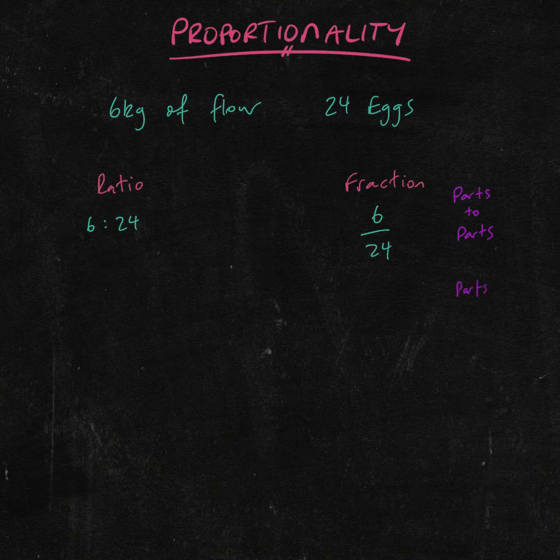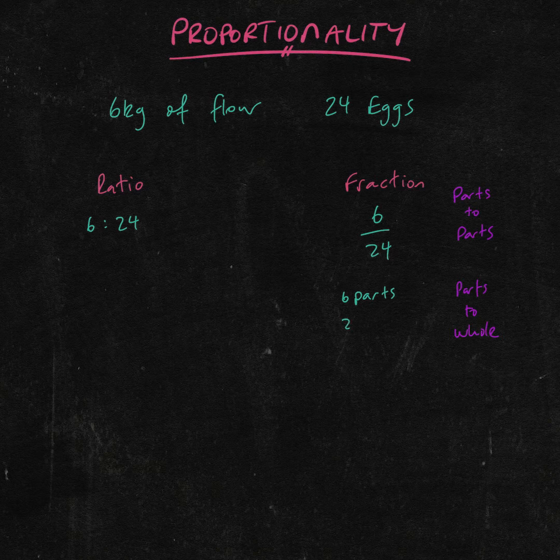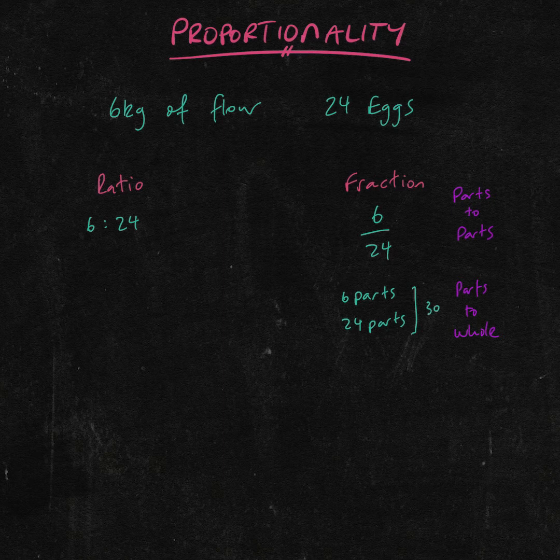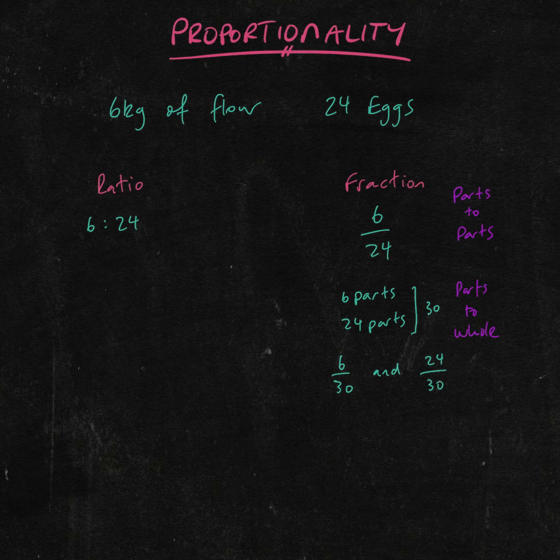If we wanted to look at all of the ingredients, which we call parts to whole, then we would write the total number of ingredients as our denominator, which, if we are just looking at the flour and eggs, would be 30. So 6 parts of an ingredient to 30 parts of all of the ingredients. And that would be the same for 24 parts of ingredients to 30 parts of ingredients.